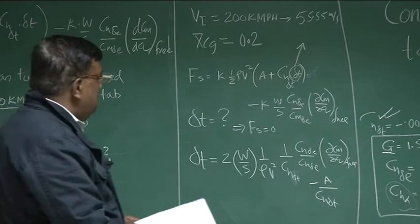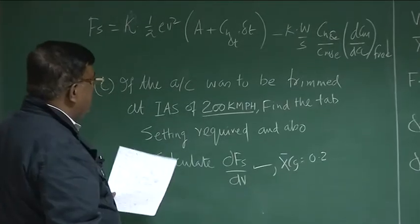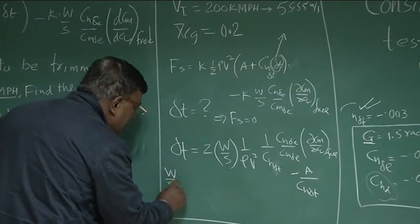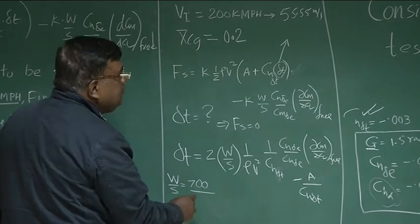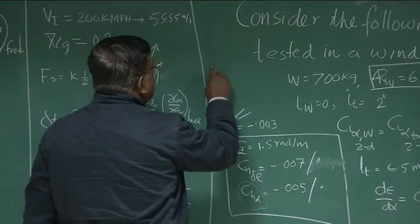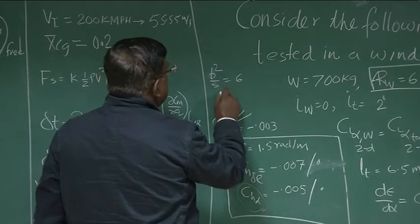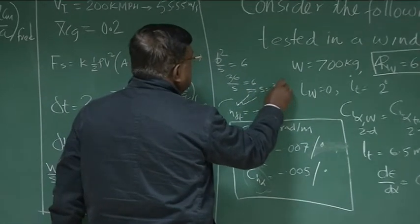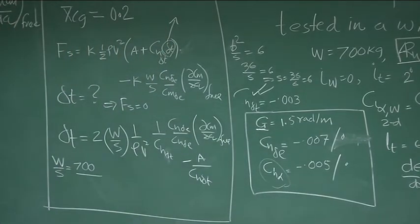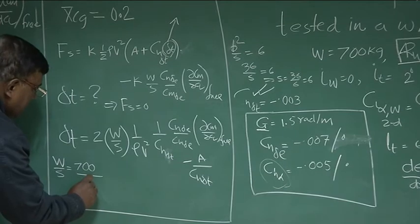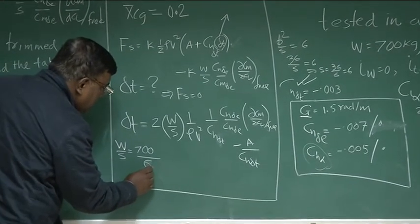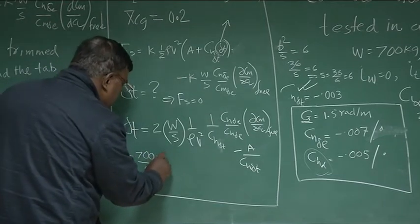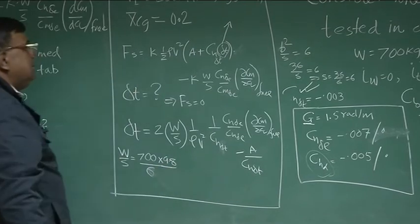So now what is required? Do you know W by S? Let us see. I will not erase this because we will be recurring this. We will do some trick. What is W by S? W by S, W you know 700 divided by S. S you can find out. Aspect ratio is B square by S equal to 6. And B is 36. That means 36 by S equal to 6. This implies S equal to 36 by 6. So it is 6 meter square. Okay. So I write W by S equal to this by 6. Is it correct? No, it is not correct because W should be Newton. So I have to multiply this by 9.8. Do not forget that.